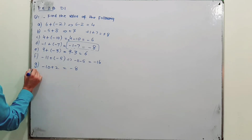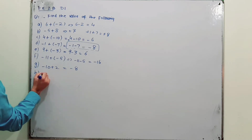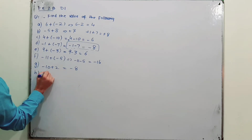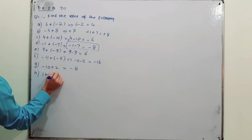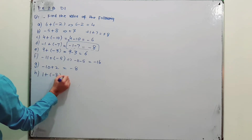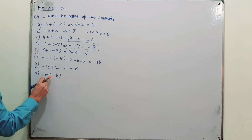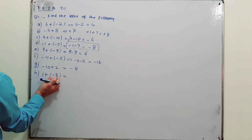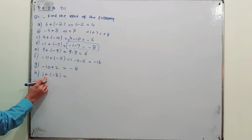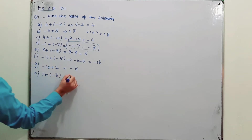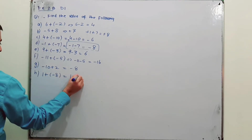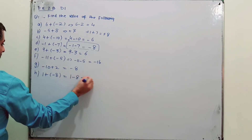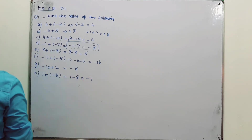Part H: 1 plus (minus 8). When you open the bracket, the minus overcomes the plus sign — it becomes 1 minus 8, so the answer is minus 7.